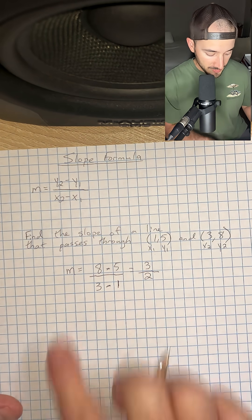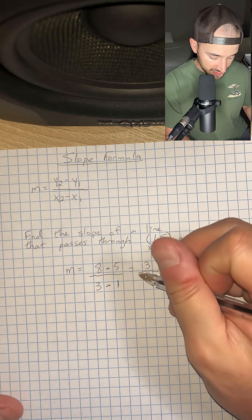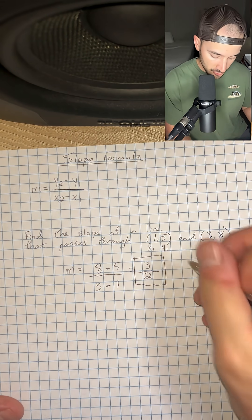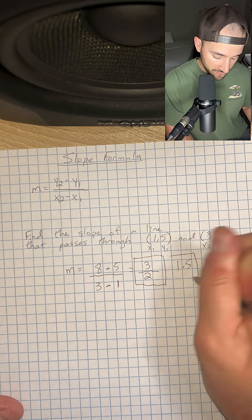Okay, so that means that our slope is equal to 3 over 2, or you could convert that to a decimal and say that it's equal to 1.5.